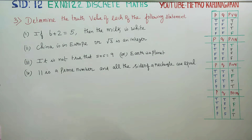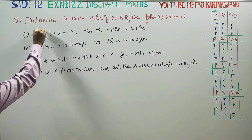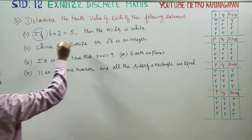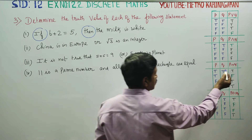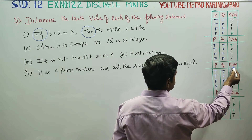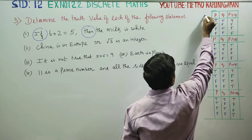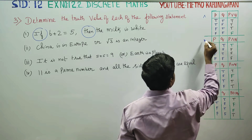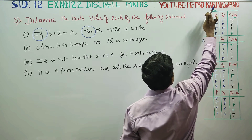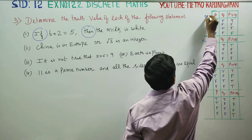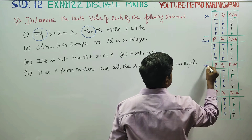The first statement is: if 6 plus 2 is equal to 5, then the milk is white. We will show you the if-then (→) connective. This is the if-then symbol.